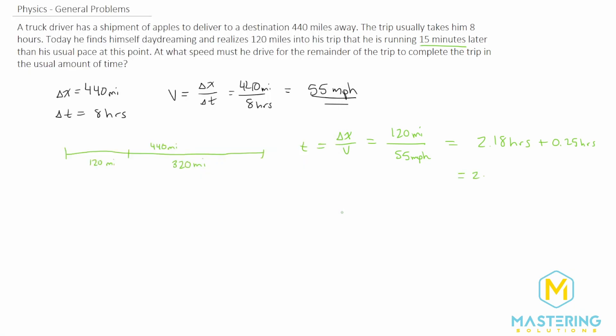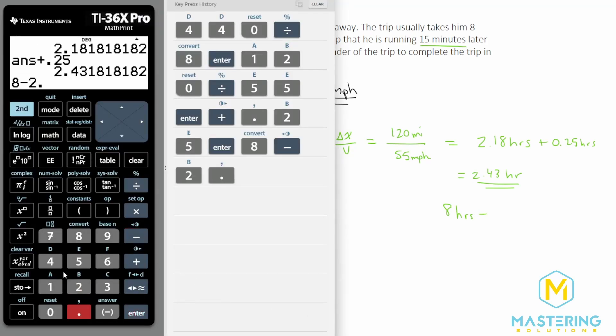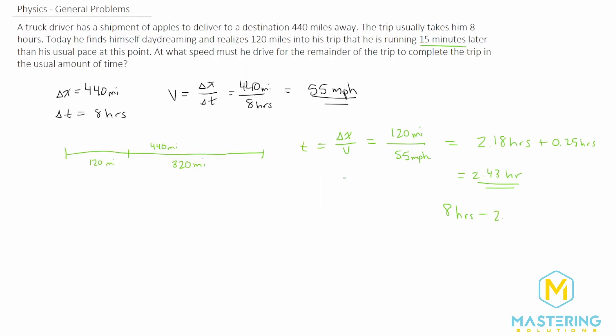So we have 2.43 hours is how long it's taken him to this point where typically it takes him 2.18 hours to get to this point. So the whole trip takes him eight hours normally. So eight minus 2.43 means that we have 5.57 hours, 5.57 hours left that we have to make up for the trip.